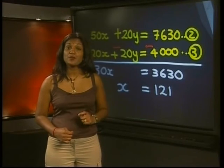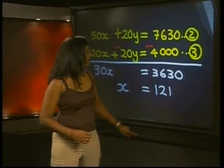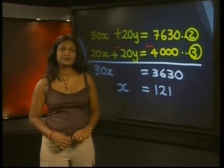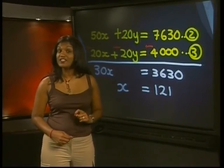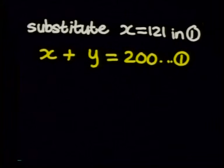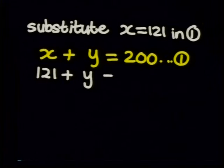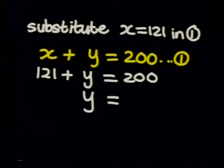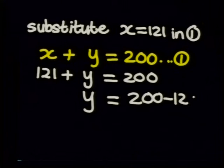Remember x was the number of 50 rand notes. So we have 121 fifty rand notes. Now we can find the number of 20 rand notes, the y value. I can find y by substituting x equals 121 into equation 1. I get 121 plus y is equal to 200. To solve for y I get y is equal to 200 minus 121 and that gives me 79.